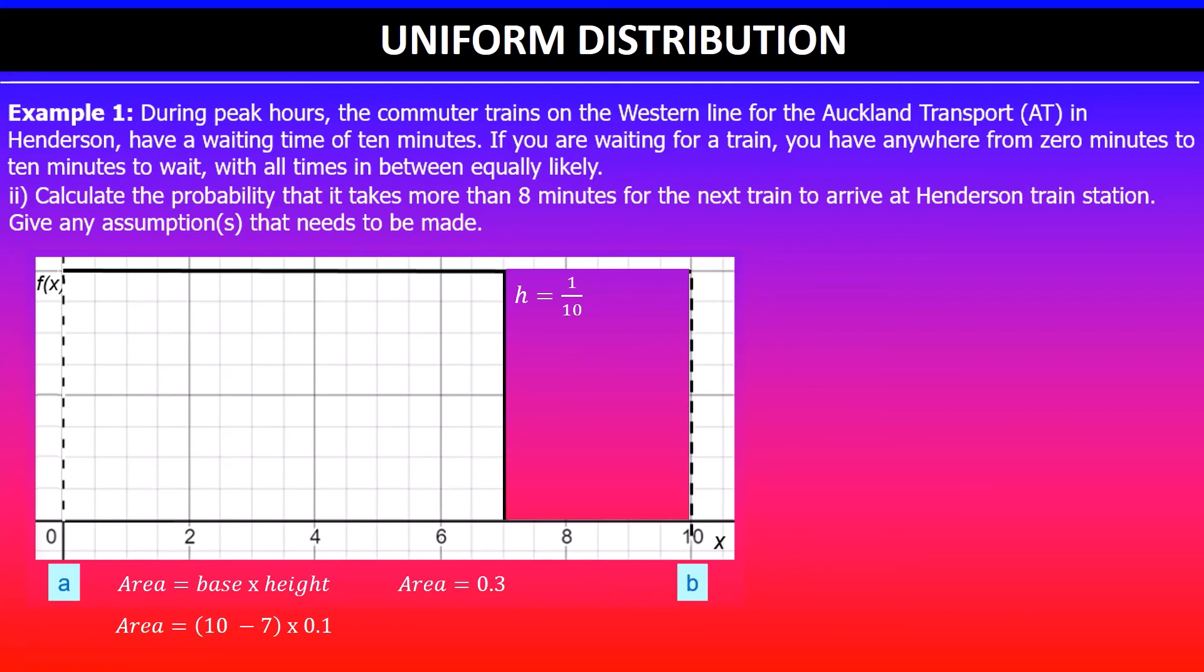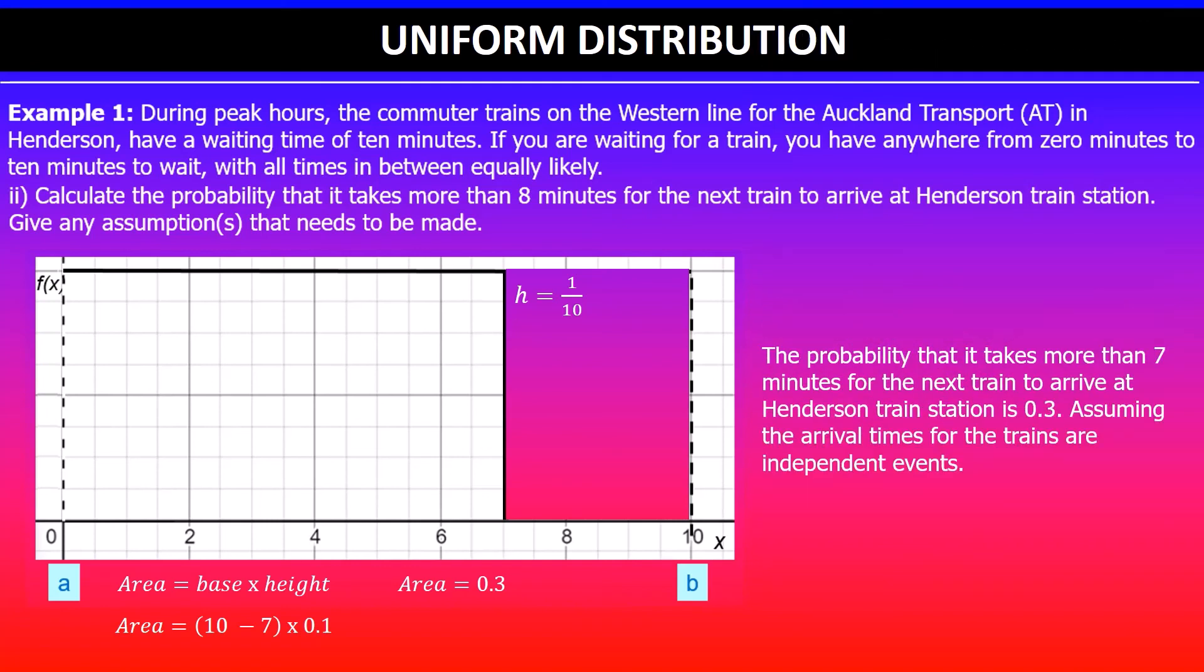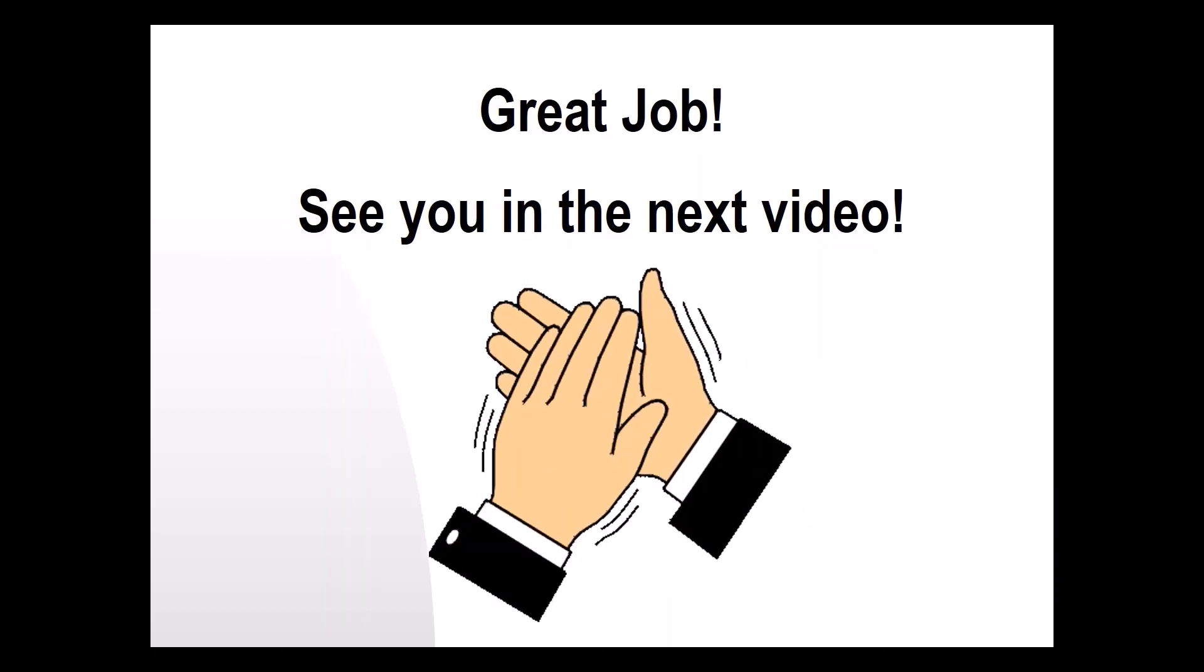Putting this information together, we get an area of 0.3, and area is the probability. We write the answer in context: the probability that it takes more than seven minutes for the next train to arrive at Henderson train station is 0.3, assuming the arrival times for the trains are independent events. Thanks for watching, I'll see you guys in the next video.